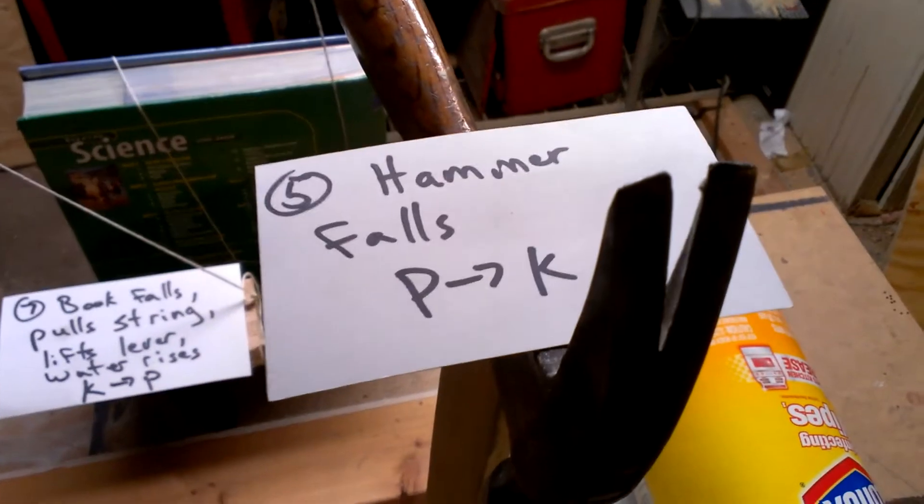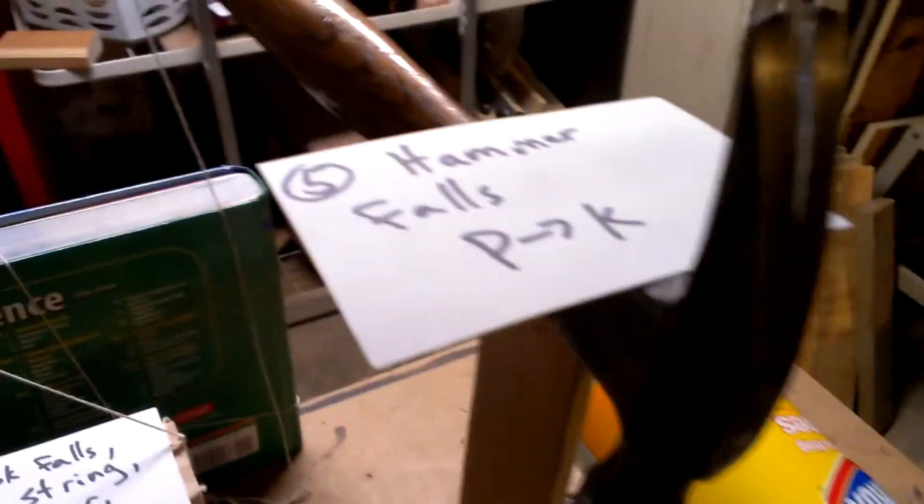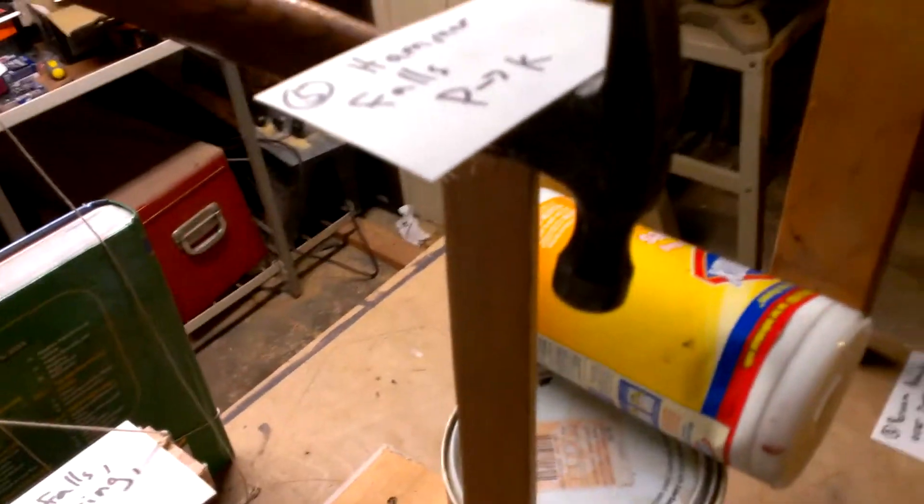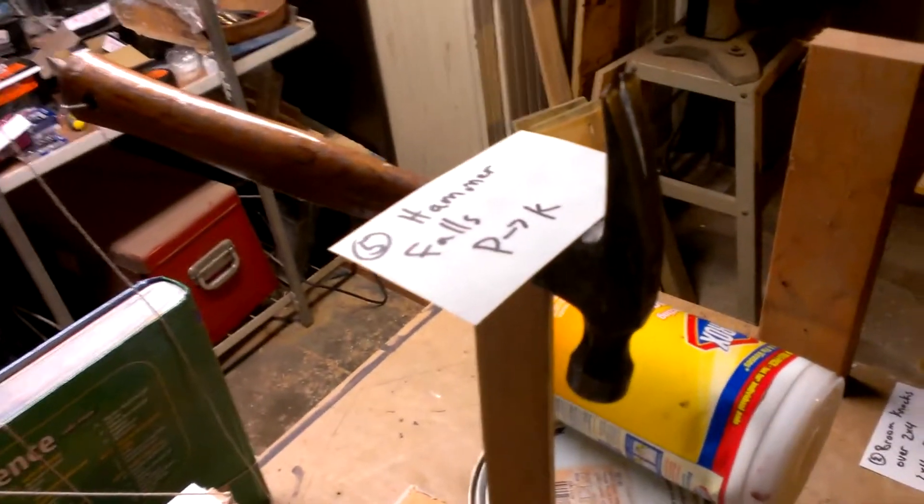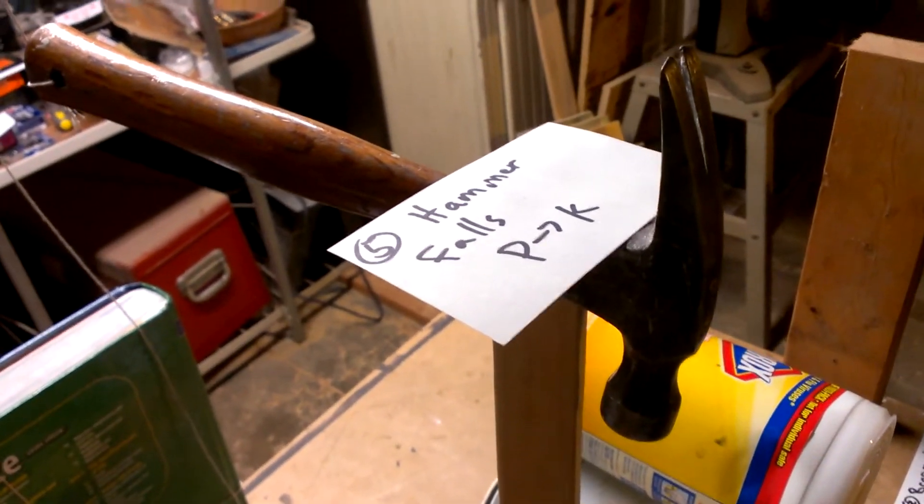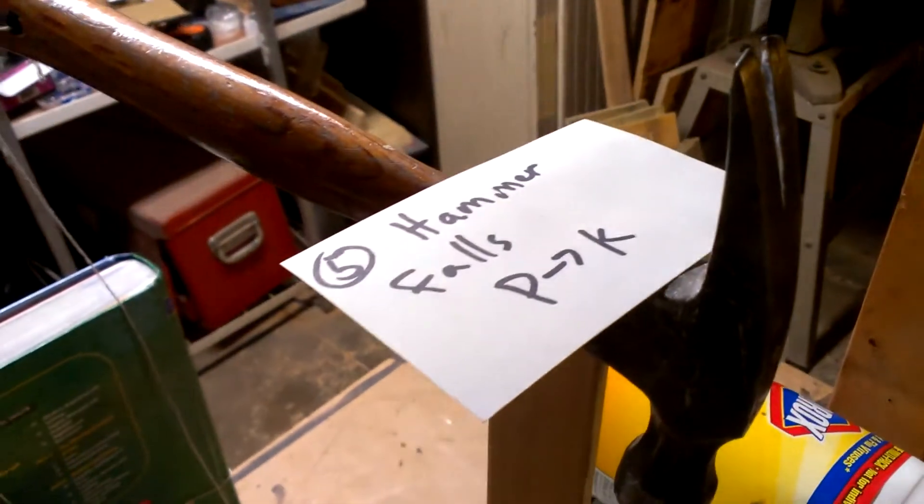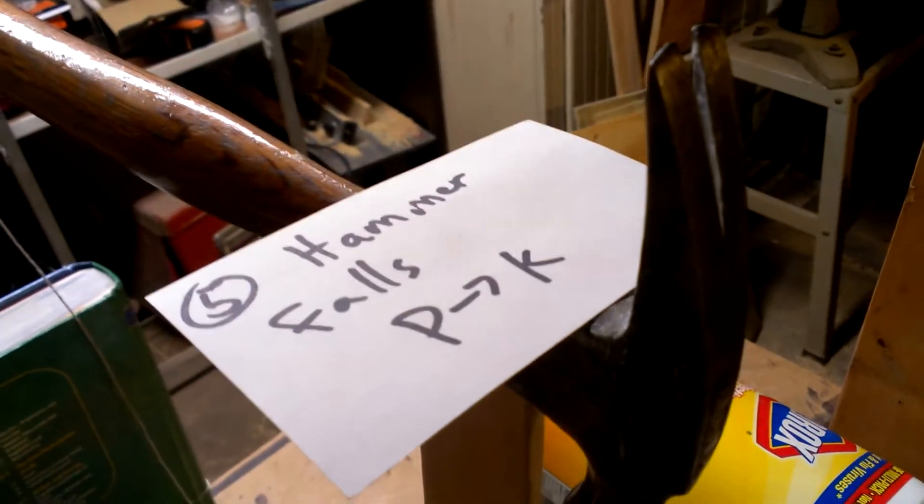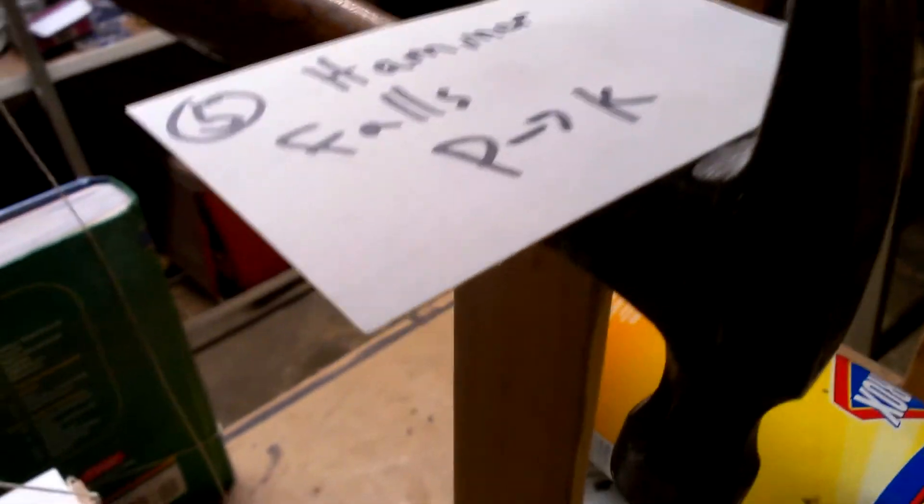When the stick gets knocked out, this hammer which is very precariously balanced on it will fall. Now the hammer, because it's up off the table, has a lot of potential energy. The potential energy comes from all of its mass and height. That potential energy will switch to kinetic and the hammer will now be in motion.